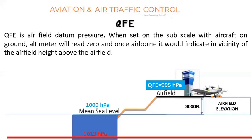QFE is airfield datum pressure. When set on the Kohlsman window subscale with aircraft on the ground, the altimeter will read zero. Once airborne, it would indicate height above the airfield, that is height above ground level. It is used by trainee pilots for circuit flying. QFE references the surface. To find QFE at a particular airport, use the pressure setting knob until the altimeter reads 0 feet, then check the reading in the Kohlsman window — this corresponds to zero altitude and is the aerodrome pressure, giving us QFE.